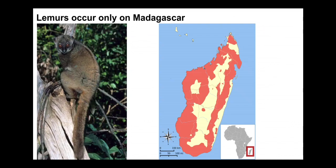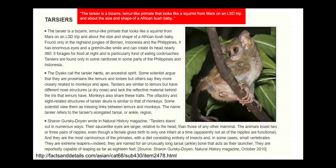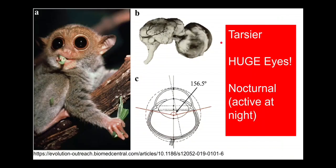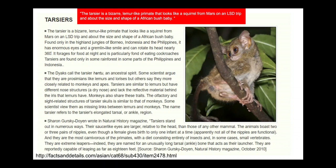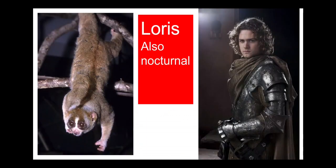Lemurs are also typically nocturnal but don't have these outrageously huge eyes. There's a quote describing tarsiers as a bizarre lemur-like primate that looks like a squirrel from Mars on an LSD trip — which I think sums up these funny-looking but cool little creatures. Lorises are a similarly nocturnal species; their eyeballs are not as outrageously proportioned but they do have very large eyes.